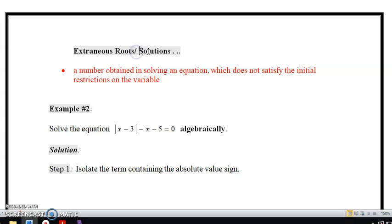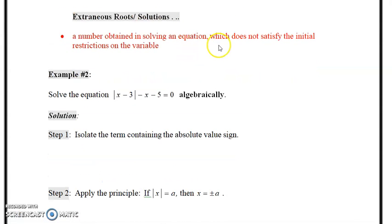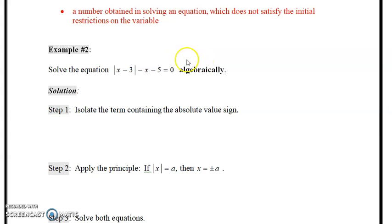So that's it. Over the entirety of the course, you're also going to end up with extraneous roots and solutions. So a number obtained when you solve the equation that does not necessarily satisfy the restrictions on the variable. So that will happen sometimes. So let's just solve the following equation algebraically. We have the absolute value of x minus 3 minus x minus 5 is equal to 0. Solve this algebraically.